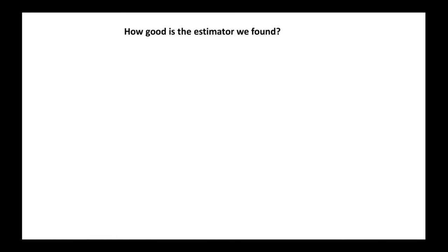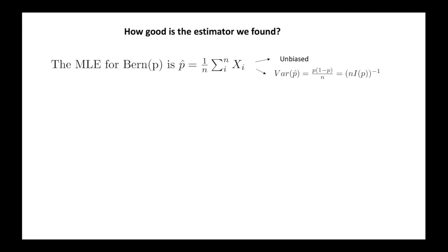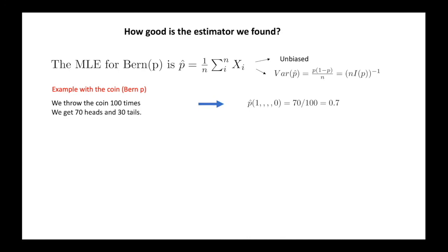Now let's see how good this estimator is. Since the estimator is 1/n times the binomial with parameters n and p, it is easy to see that its mean is exactly p. So it is an unbiased estimator, and it can be calculated that its variance is equal to the Cramér-Rao lower bound. Therefore, we have found a very good estimator. In the example of the beginning, where we threw a coin 100 times, we can use as estimator the sample mean — which in this case is 0.7 — and we know that given the data we have, it is basically the best estimation we can get.